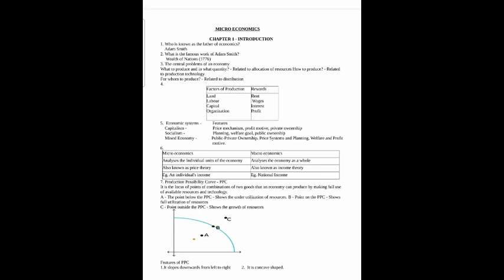We call these factors of production and rewards. The factors of production are: land, labor, capital, and organization. You should memorize these. The rewards are: land gets rent, labor gets wages, capital gets interest, and organization gets profit. That is the organizer's reward. Remuneration for land, labor, capital, and organization is rent, wages, interest, and profit.